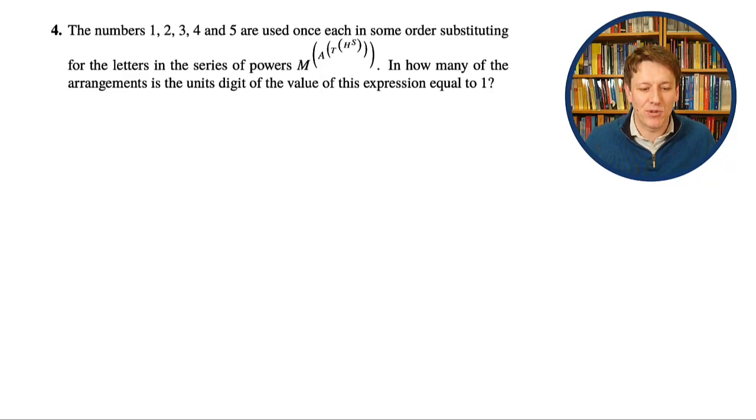This is a very fun maths Olympiad problem. We've got the numbers 1, 2, 3, 4, and 5, and they're used once each in this expression, substituting for the letters m, a, t, h, and s in this tower of powers, m to the a to the t to the h to the s. In how many of the arrangements is the units digit of the value of this expression equal to 1?